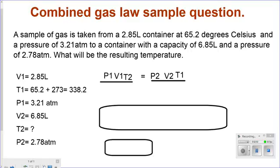Volume 1: 2.85 liters. T1: 65.2 plus 273 to make it into Kelvins, 338.2. Pressure 1: 3.21 atm. Volume 2: 6.85. T2: I don't know. And pressure 2 would be 2.78 atm.